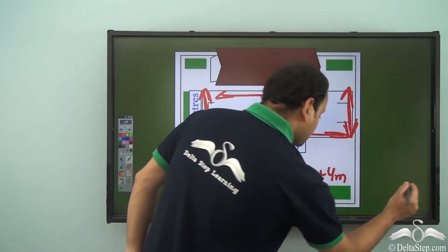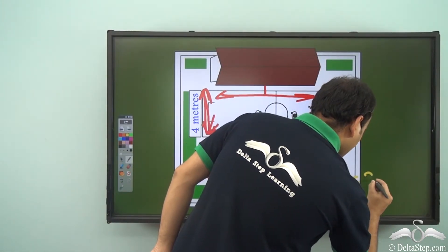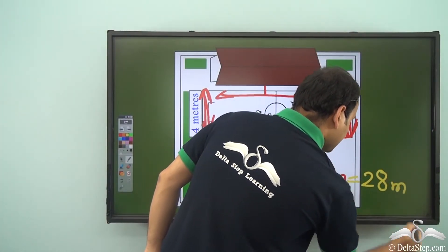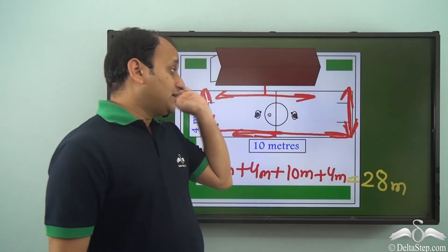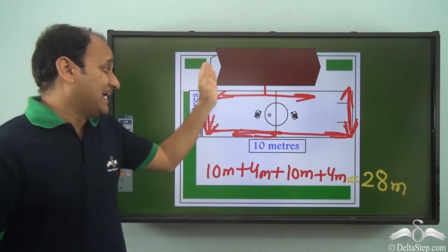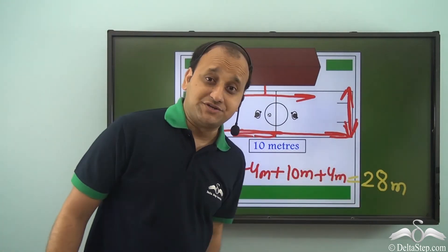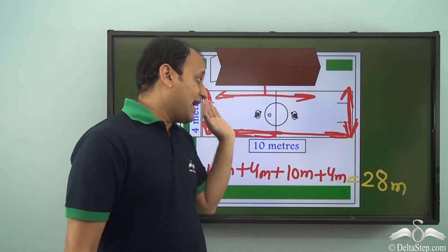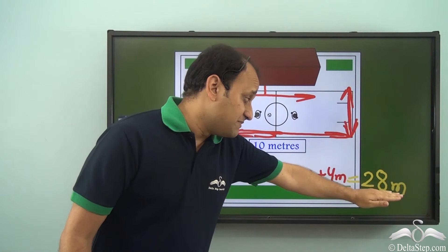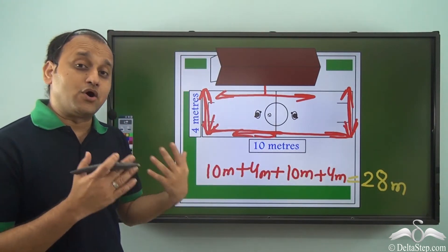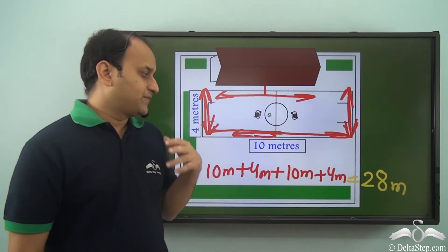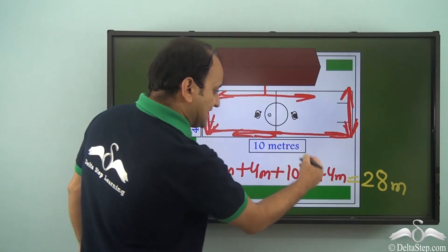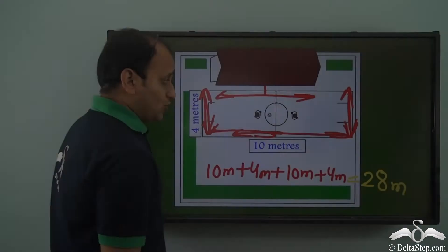The answer is 28 meters. The perimeter of this particular area they decided on is 28 meters, and this is the amount of fencing they need to purchase. So we added 10 plus 4 plus 10 plus 4 — that is, length plus breadth plus length plus breadth.